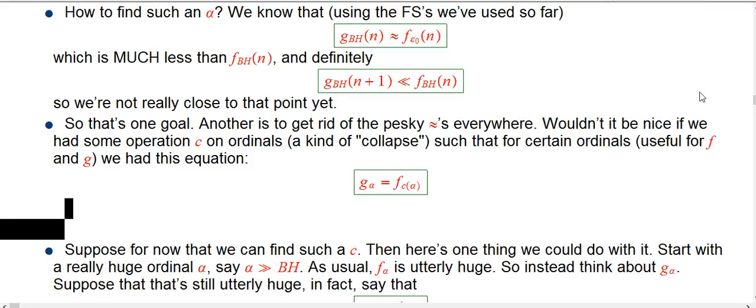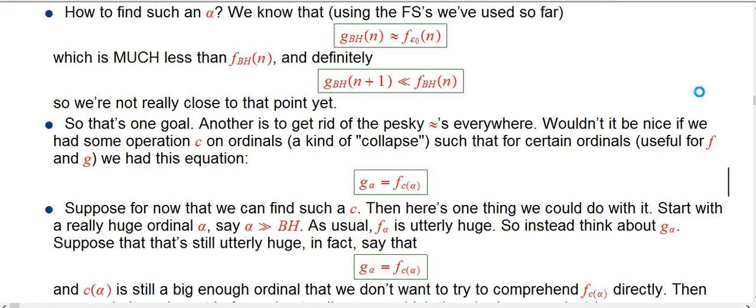So here's one thing we can do with that. So, we start out with some really huge ordinal α. Let's say it's bigger than anything we've created explicitly before, it's bigger than the Bachman-Howard ordinal, for example. So, f_α, utterly huge, something that is really hard to just directly grasp. So we do our usual trick, and we say, okay, let's think about just g_α.